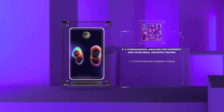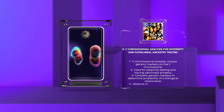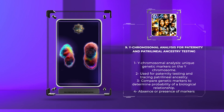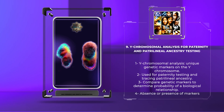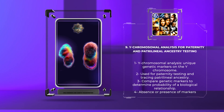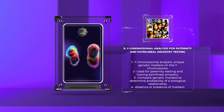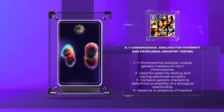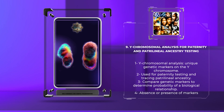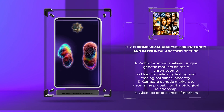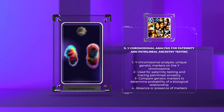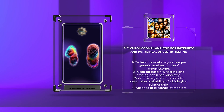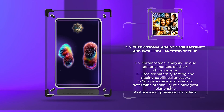Y-chromosomal analysis focuses on the unique genetic markers found on the Y chromosome, which is only present in males. This analysis is primarily used for paternity testing and tracing patrilineal ancestry. By comparing specific genetic markers on the Y chromosome between potential fathers and offspring, forensic scientists can determine the probability of a biological relationship. The absence of specific markers indicates exclusion, while their presence suggests a high likelihood of paternity. Y-chromosomal analysis is also beneficial for investigating cases involving male suspects, such as sexual assault or patrilineal ancestry determination.